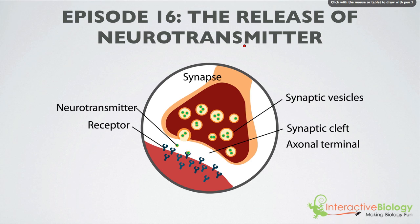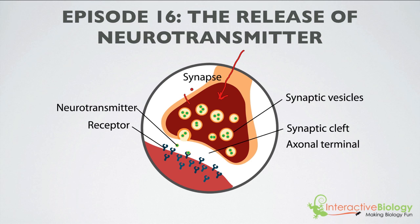So we've spoken about the action potential, and the action potential travels along the axon. I want you to imagine an action potential coming down this axon and reaching the axon terminal. Now, there are a number of things that happen when the action potential reaches the axon terminal. One of the most important things is we have voltage-gated calcium channels that open. And when voltage-gated calcium channels open, calcium ions (Ca2+) that are concentrated outside are going to rush into the cell.